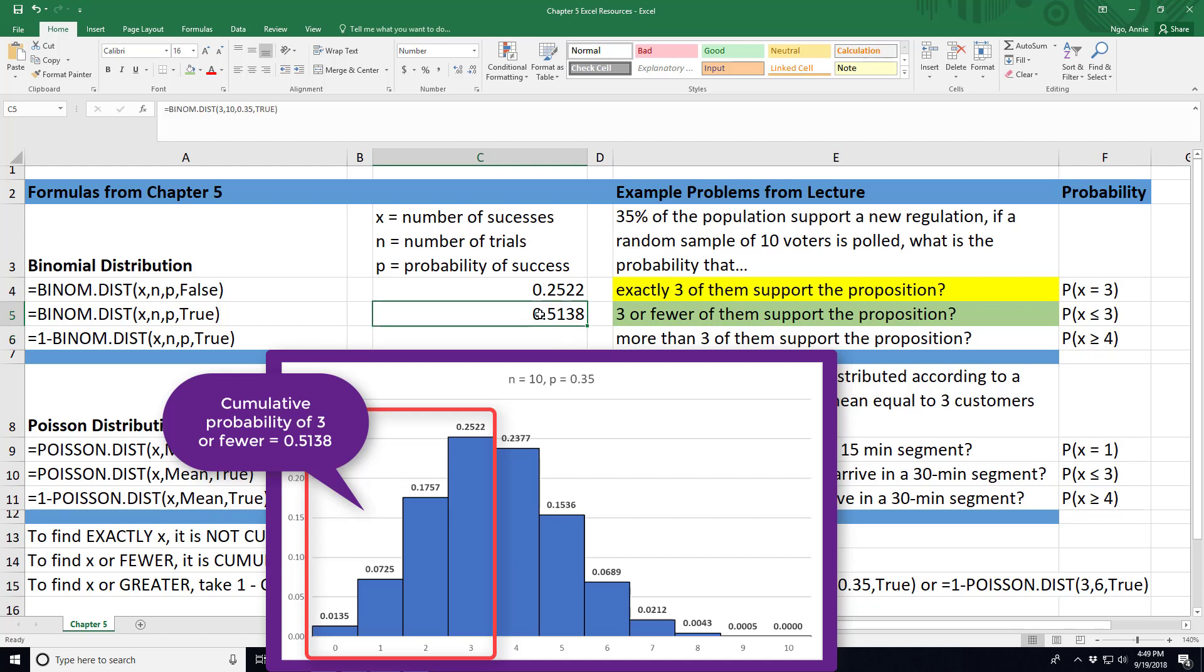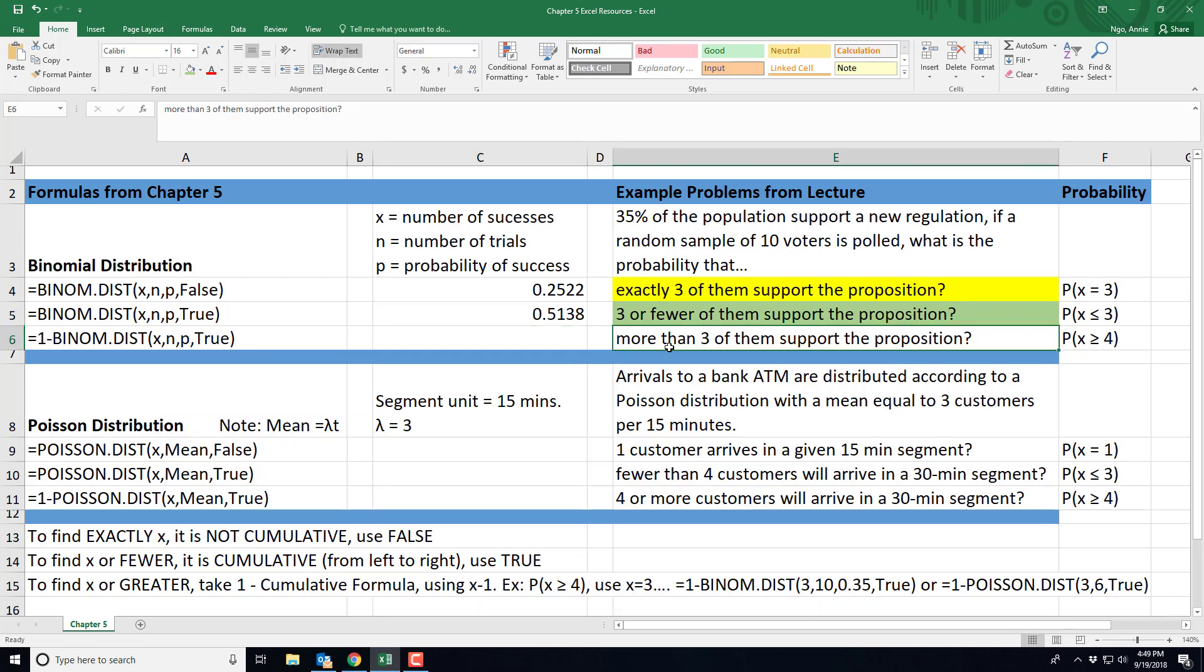Knowing this, that allows us to do the problem we did that three or fewer support the proposition. And then now let's look at this third scenario. What if it asks more than three voters support the proposition?